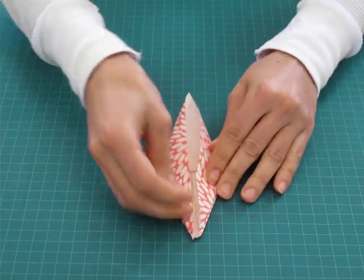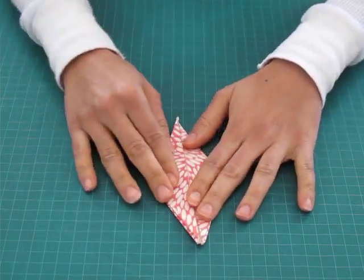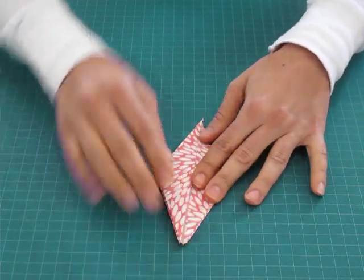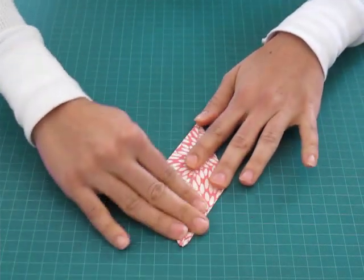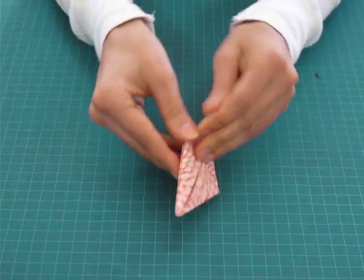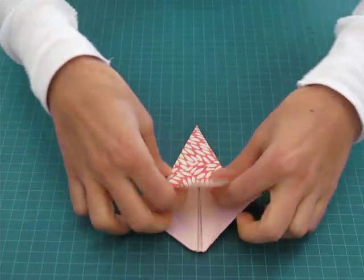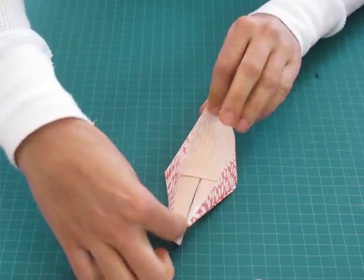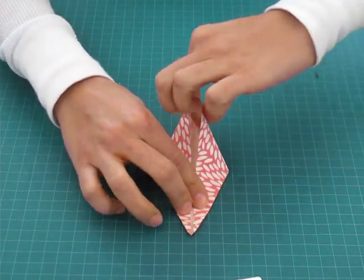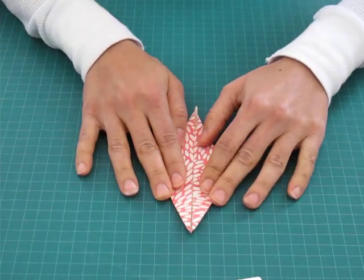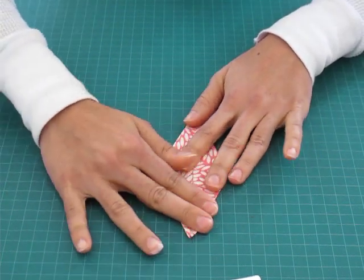Flip it over and you're going to do the same. Bring that far corner up and fold those creases onto themselves to make that diamond. Perfect.